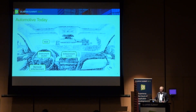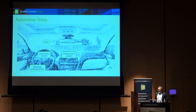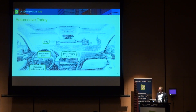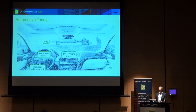I want to start by talking about the automotive sector. There are a number of interesting car companies using Qt today. But we need to understand where the automotive industry is today and where it's going. When Trolltech was acquired by Nokia, we had a very good understanding of mobile phone technology. And today when I talk to leaders in the automotive industry, I see that they are very much where the mobile phone industry was five to seven years ago.